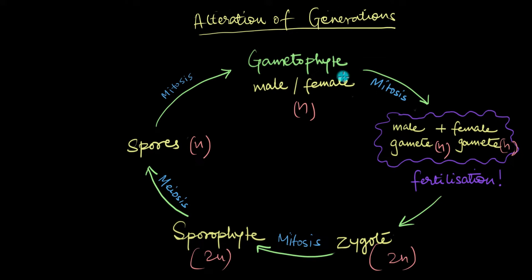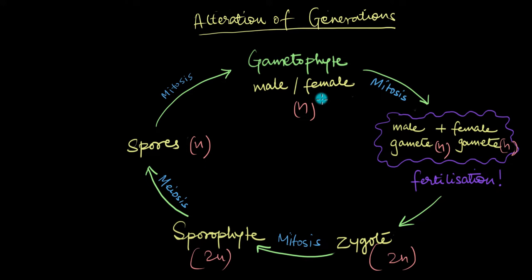Generally, this is how alternation of generations works, but the specifics change as plants evolved. The simpler, more primitive plants ended up exhibiting a dominant gametophyte, which was more prominent and long-living. But this dominance reduced significantly as plants became more and more complex.